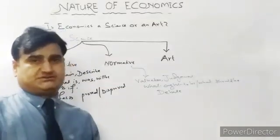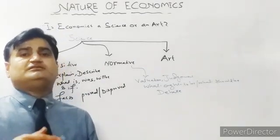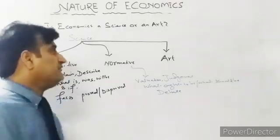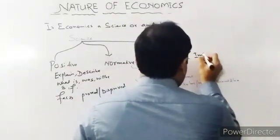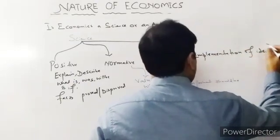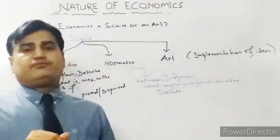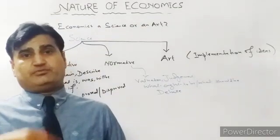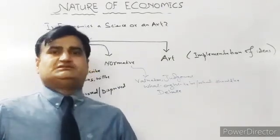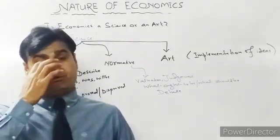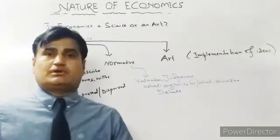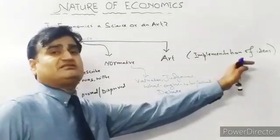When does science become an art? It is now clear that economics is a science, but it is also an art. Art means to perform something in a good way. Art can be defined as the implementation of ideas. For example, if the entrepreneur decides its output on the basis of profits, it is a positive statement. If the entrepreneur should decide output on the basis of profit, it is a normative statement. If Pakistan should decrease the tax rate and it is amended and effective, then it is an implementation of ideas — and that is where science becomes an art.